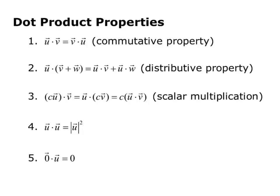The fourth property is u dotted with itself equals the magnitude of u squared. And then last, the zero vector dotted with any vector is zero. So you start out with a zero vector, you dot it, and you end up with the scalar zero, so just the number zero.